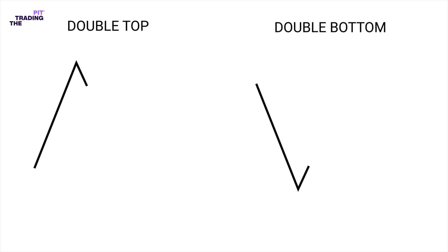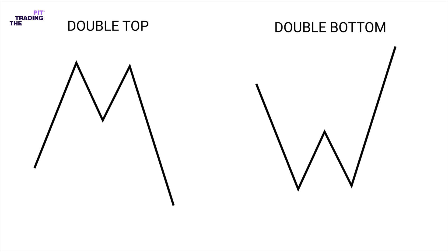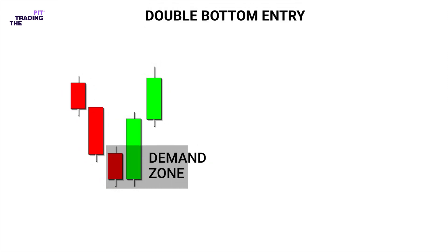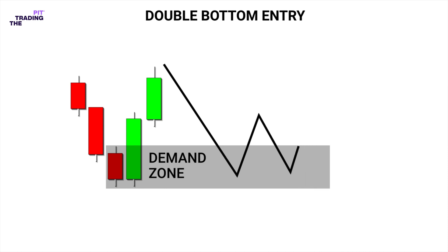The second entry confluence we are using is the double top and double bottom pattern. It's very easy to spot. Double top and bottom patterns are trend reversal price action patterns that form two consecutive tops or bottoms. Here is our demand zone. We wait for the price to retrace and form a double bottom before we place our buy entry. A double bottom is a chart pattern where price forms two consecutive lows.